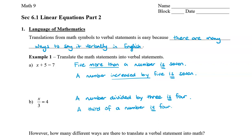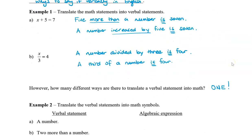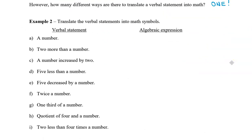So we can see that there are many, many ways to translate math statements into English sentences. However, how many ways are there to translate a verbal statement into math? In that sense, most of the time there is only one. So let's take a look at some examples. Here we have some verbal statements on the left-hand side, and we're going to translate these into math symbols, or into algebraic expressions.